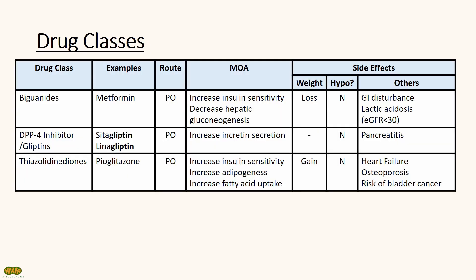It's important to know the mechanism of action, examples, and side effects of diabetic medications. The first drug class is biguanides, and the only example is metformin. This is an oral medication that increases insulin sensitivity and decreases hepatic gluconeogenesis. Patients may experience weight loss, and metformin does not cause hypoglycemia. Other side effects include GI disturbances and lactic acidosis, especially in patients with low eGFR.